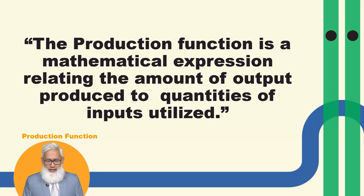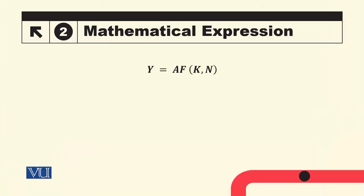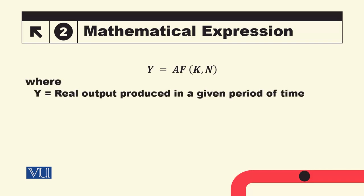This is the mathematical expression which relates the amount of output with the amount of inputs. Today we discuss Y = AF(K,N). In this, Y is the output, real output produced in a given time period.